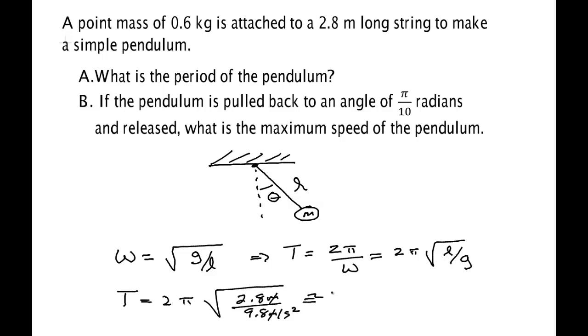And we simply punch this into a calculator. So square root of 2.8 divided by 9.8 and then we multiply that by 2 and multiply that by π. We come up with 3.36 seconds so that's the answer to part A.